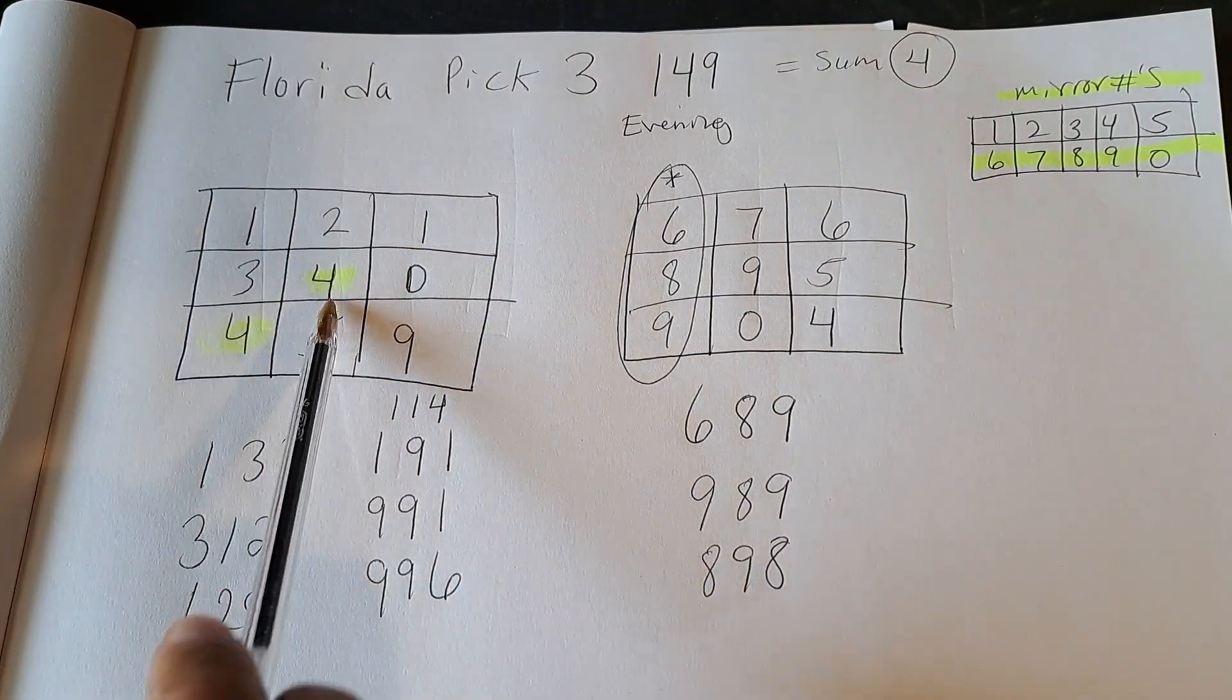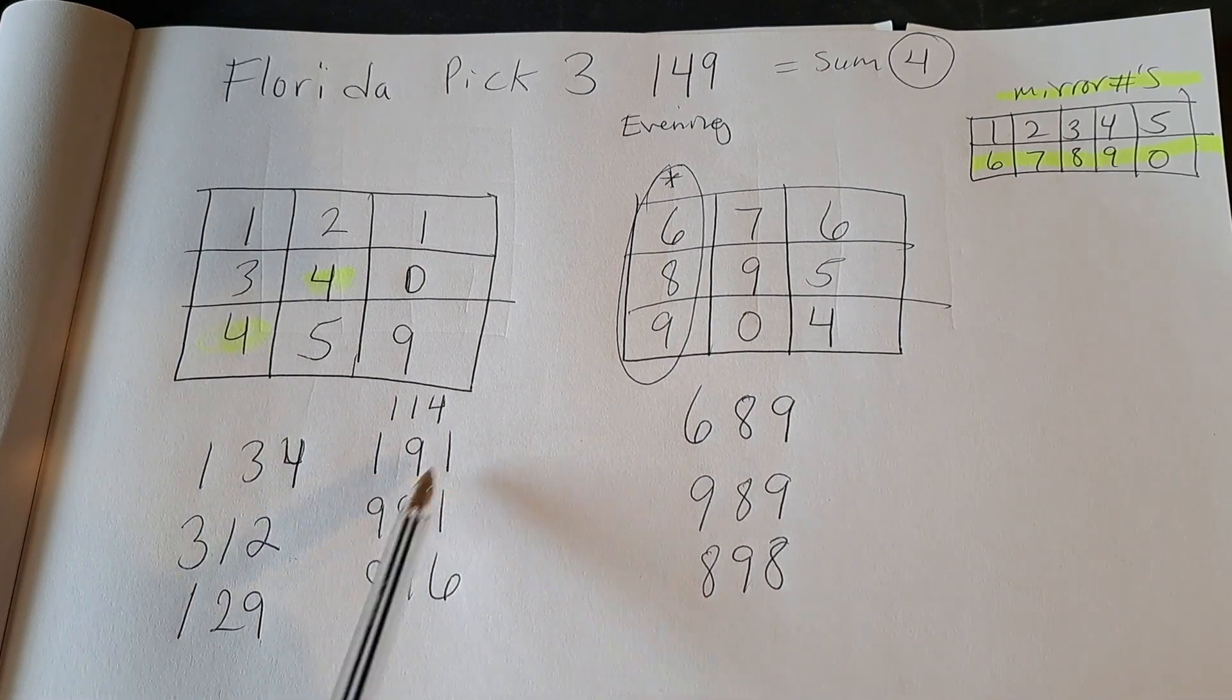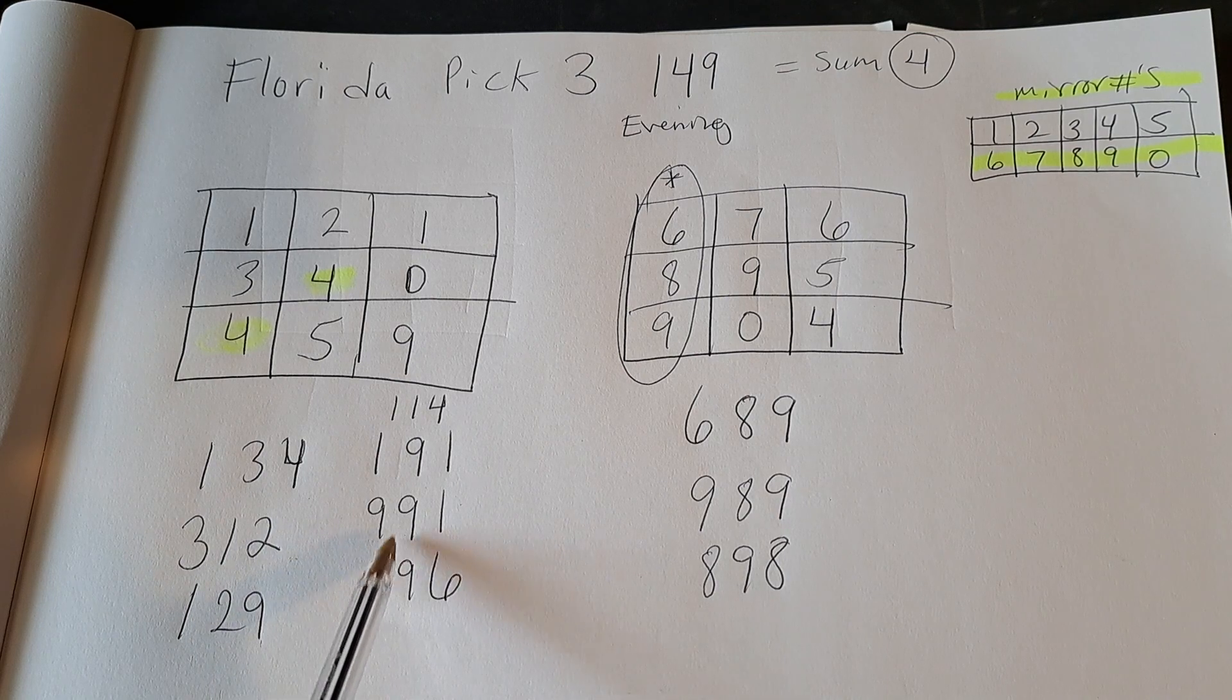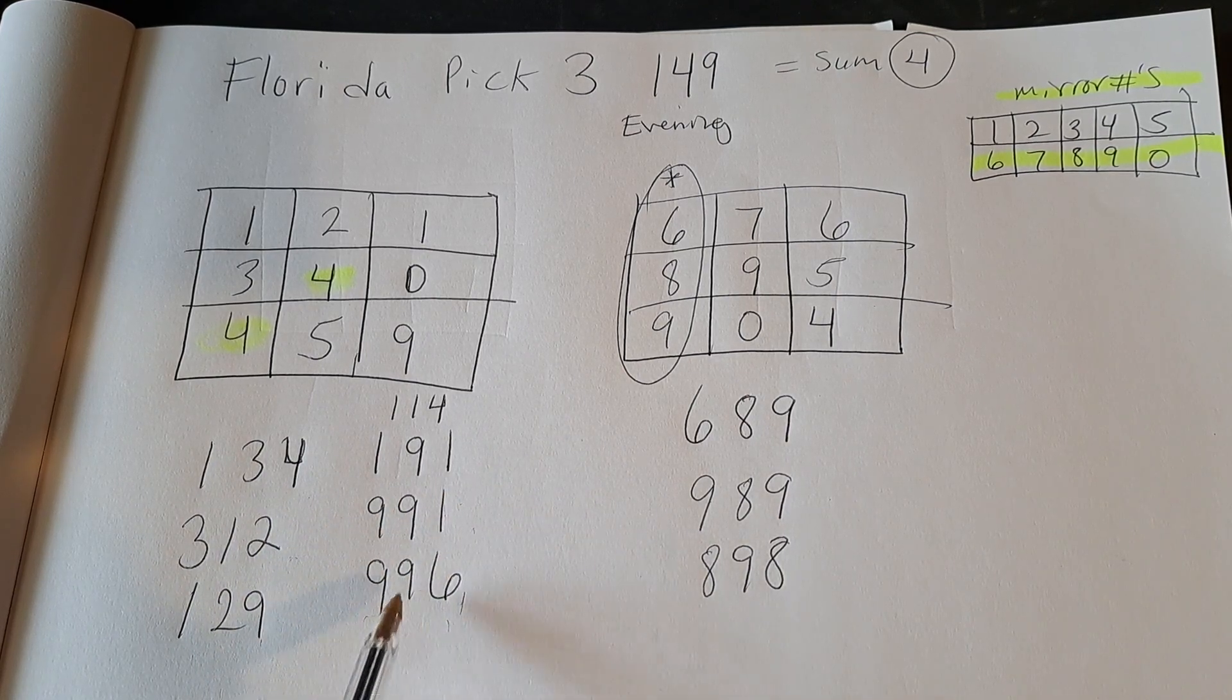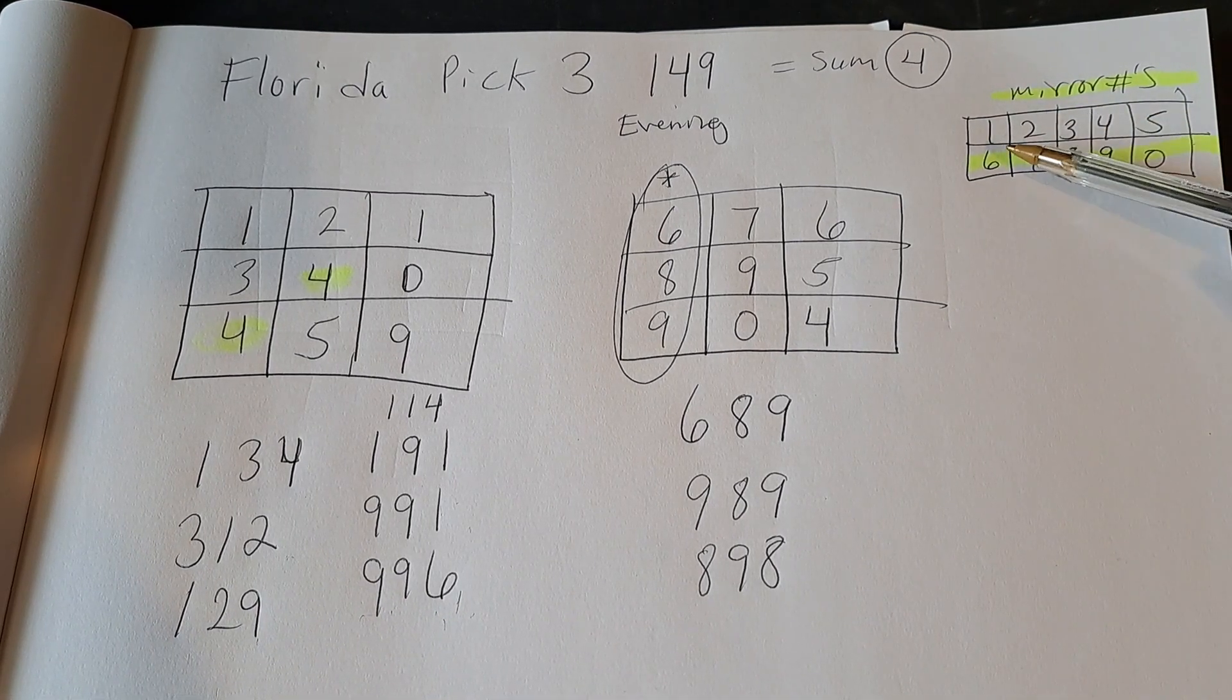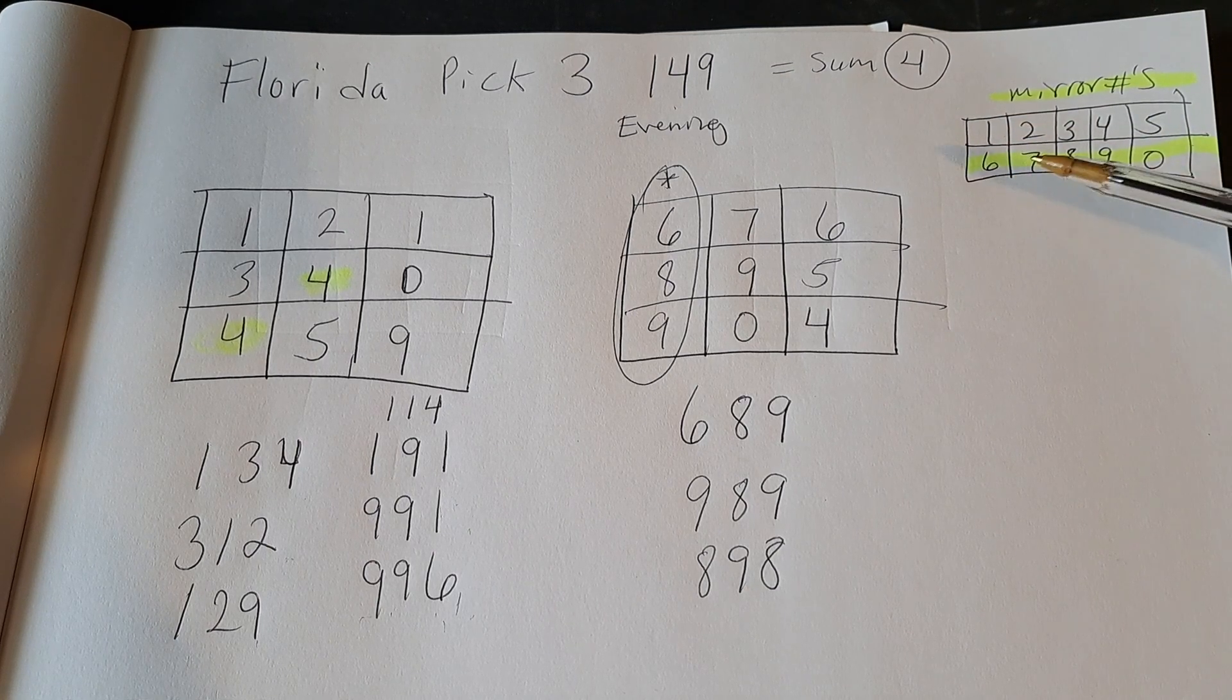I see two ones and a four. I'm liking the 114. 191 has been hot. I really like that double. And I like the mate 991. And if you mirror the one to a six you get 996. I like that one as well. And if you see right here the one you add five and the mirror number is six.